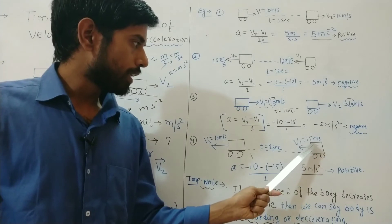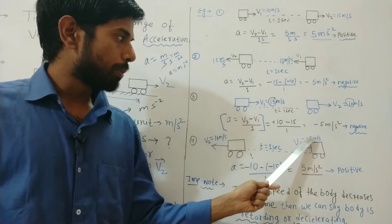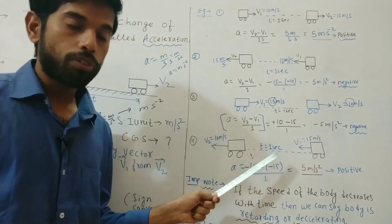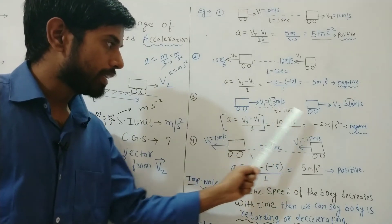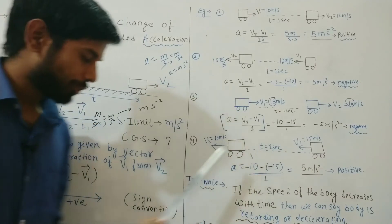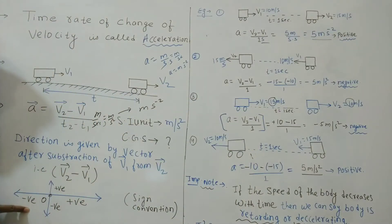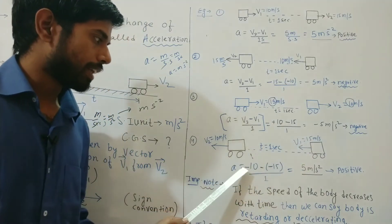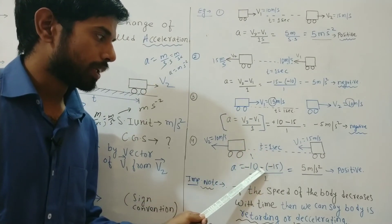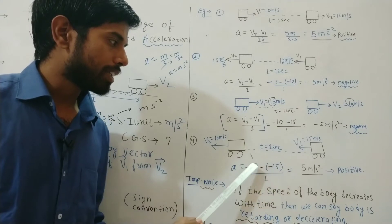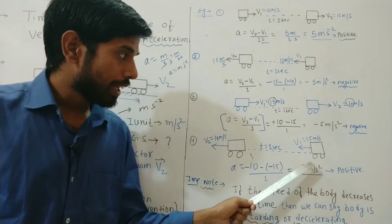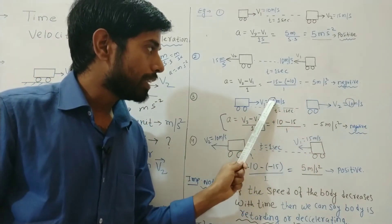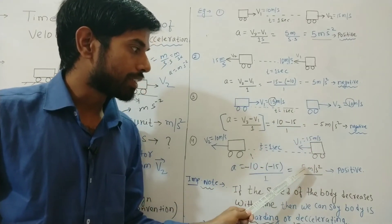Next example: a body has initial velocity v1 = 15 m/s and final velocity 10 m/s, and this change takes place in 1 second. Both are moving toward the left, so by sign convention both are negative. Acceleration = (−10) − (−15) / 1 = +5 m/s². Here acceleration is positive. But notice the speed is decreasing — 15 to 10 — so the body is retarding. Here acceleration is positive yet retardation occurs.